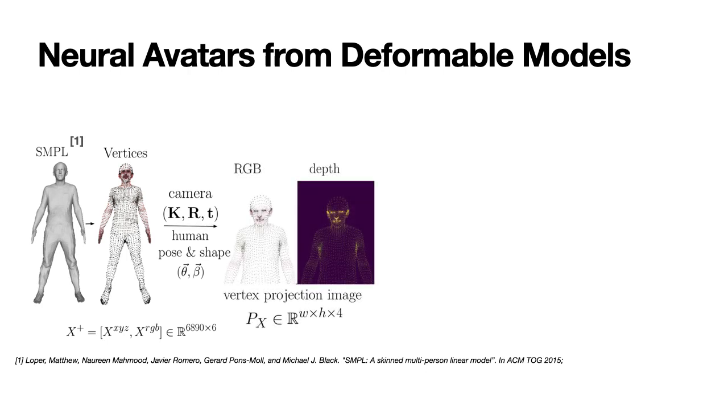RGBD training images are created by projecting the vertices onto an image plane using a pinhole camera model. Note that in this version of the pipeline, we use a simple point projection operation and do not rely on a standard mesh rasterization mechanism, which regularly brings additional algorithmic and computational complexity.